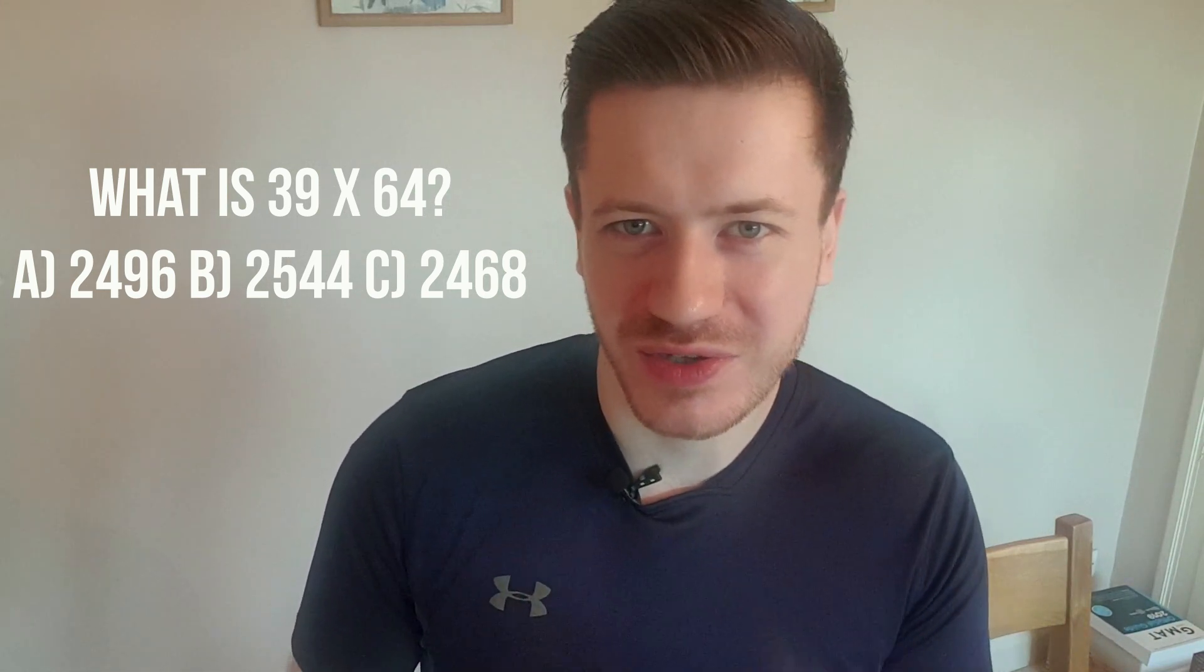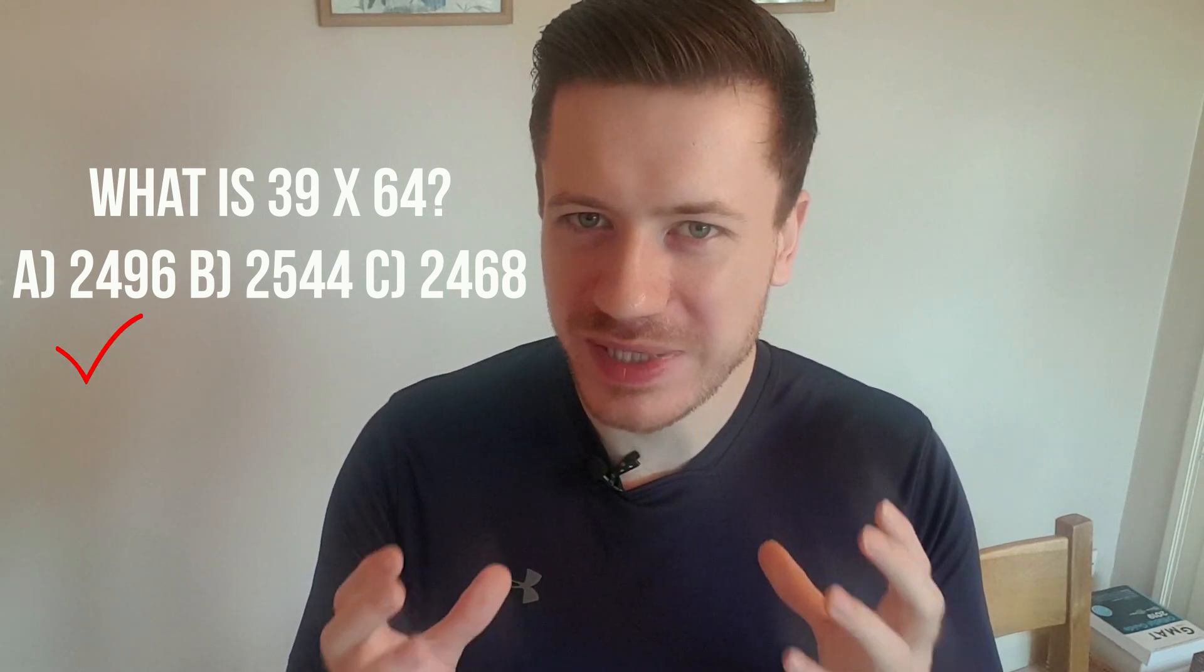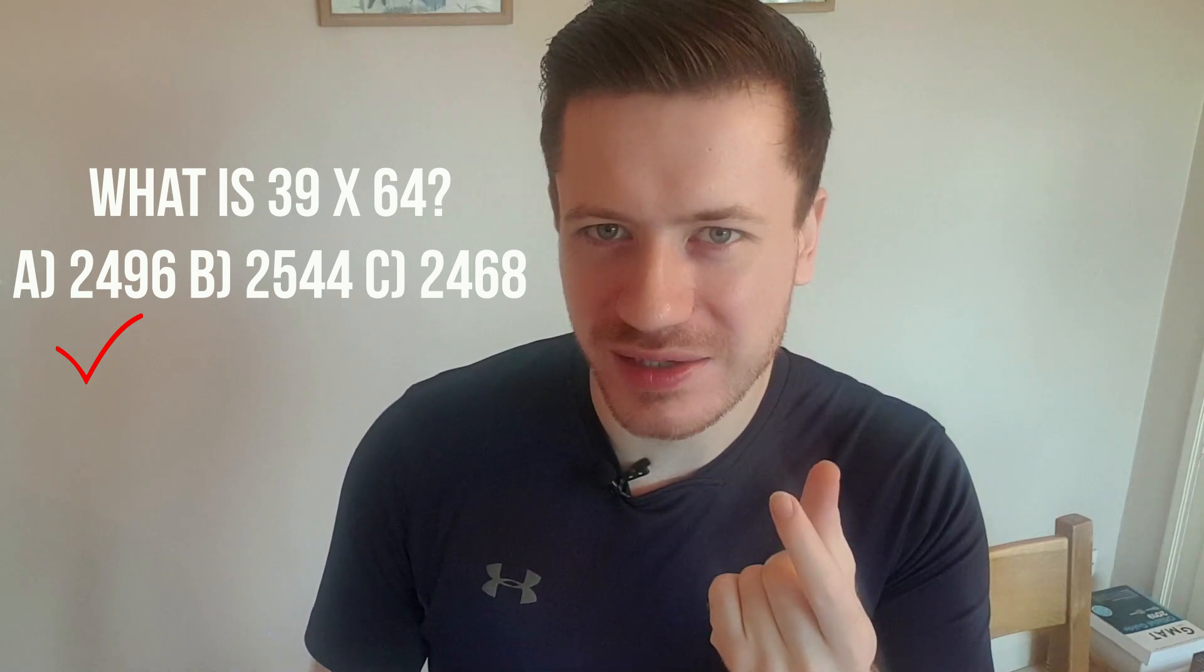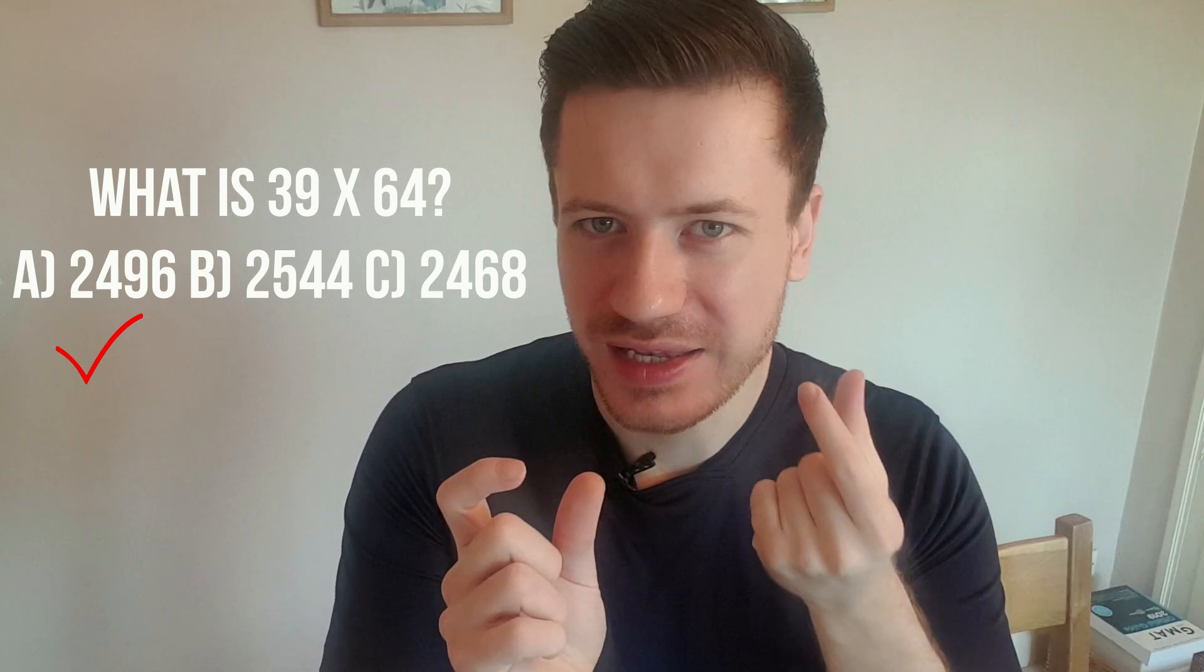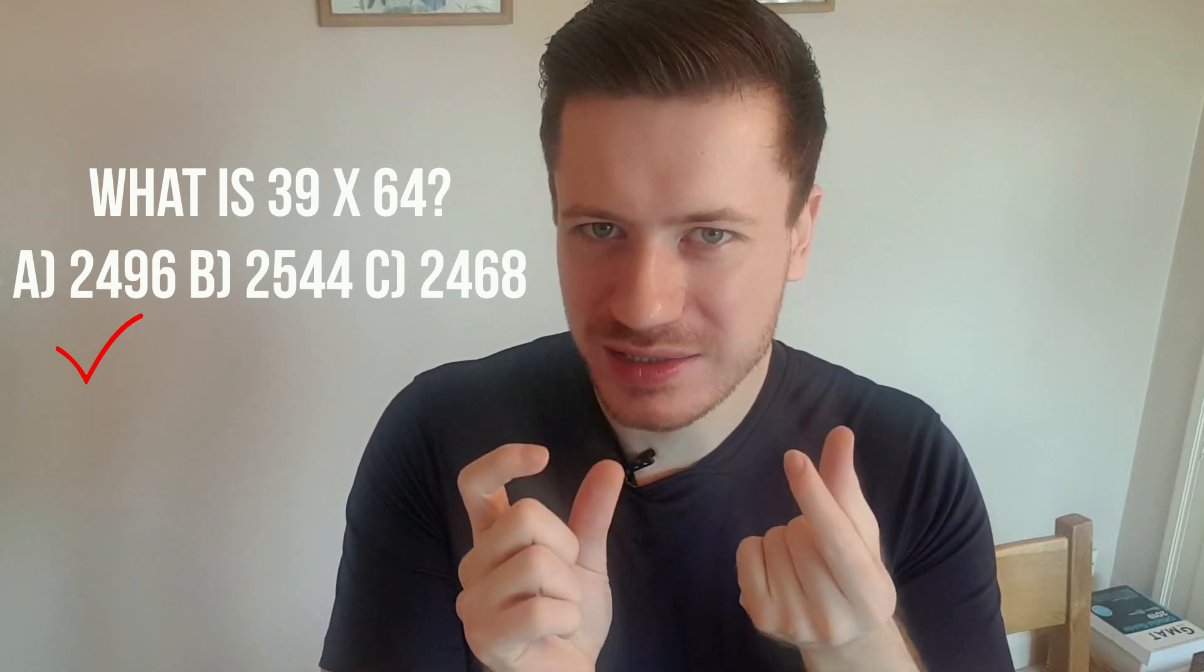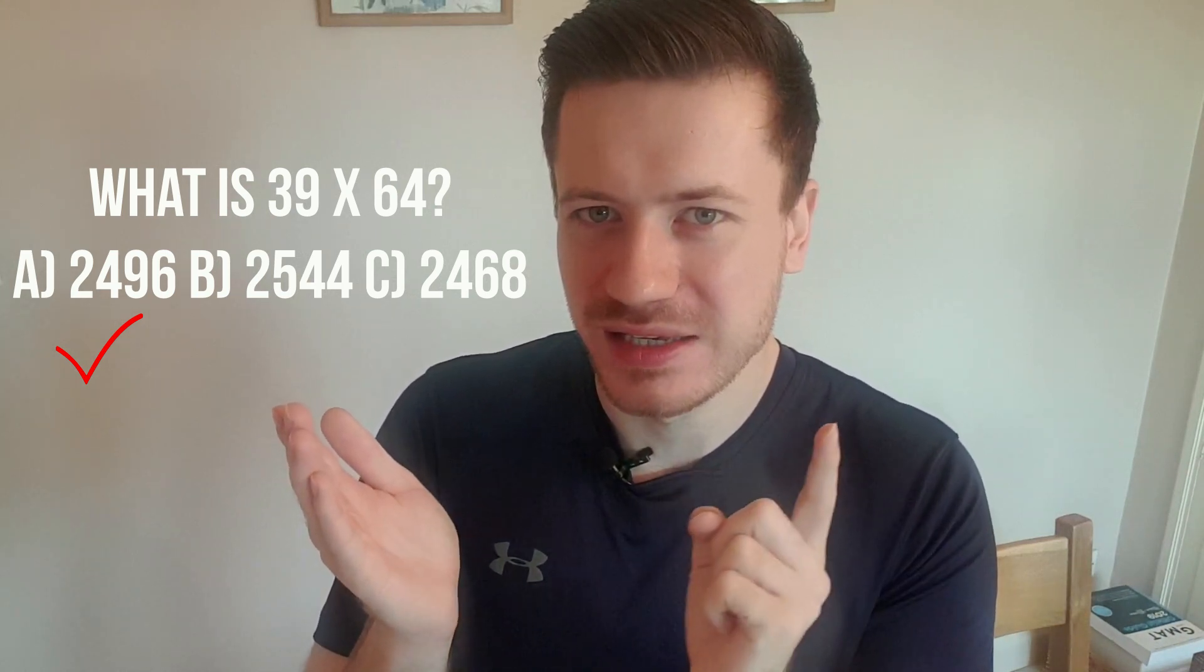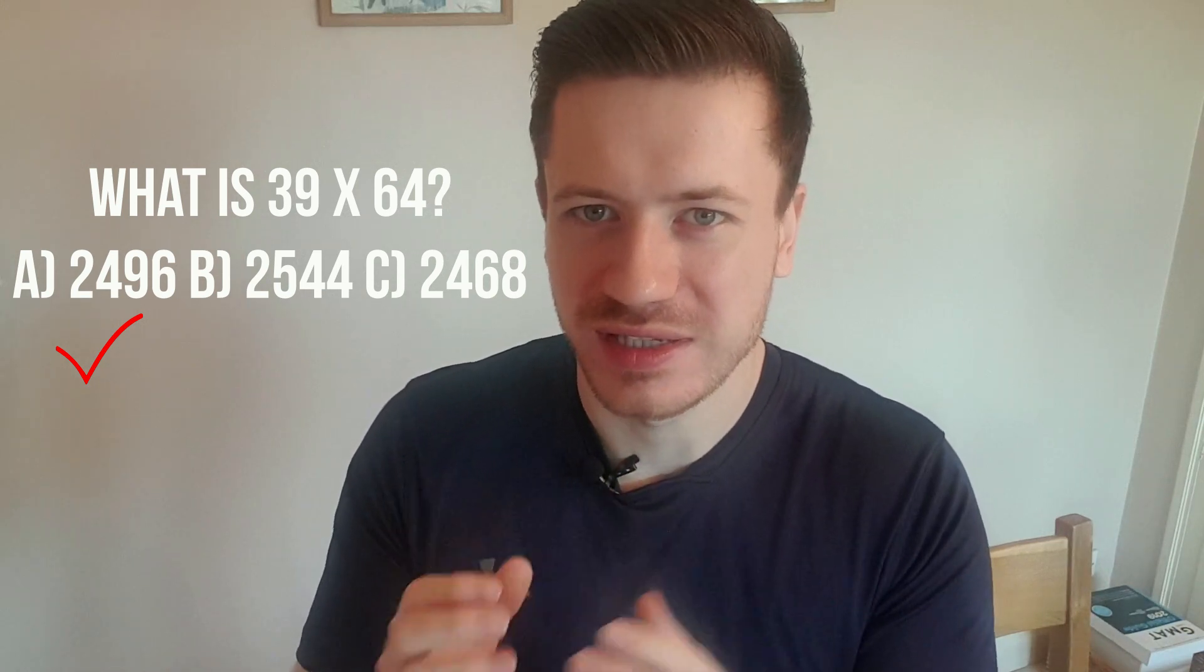It would be 2496 out of those options. Why could we be so confident? Because 39 ends in a nine, and 64 ends in a four, and nine times four is 36. We know the answer of 39 times 64 is going to end in a six. So it had to be, of those options, the one that ended in a six. 2496.